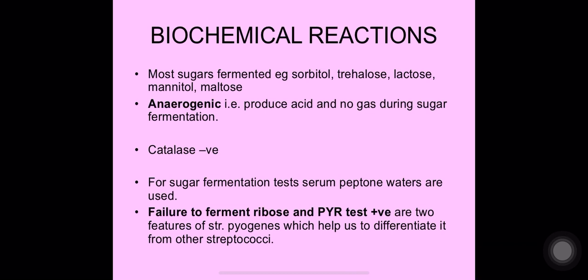Alpha hemolysis means incomplete or partial hemolysis, in which greenish discoloration takes place. Beta hemolysis means complete hemolysis — complete clearing of the zone of RBCs. Gamma hemolysis means no hemolysis at all.